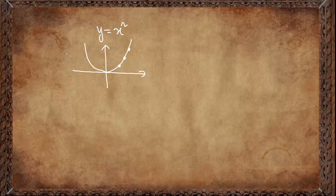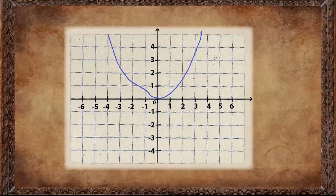In order to find the gradient of a curve, what we do is draw a tangent line at a particular point. The gradient of that tangent line at that particular point is fixed — after all, the gradient of a line is fixed. For another point, we draw another tangent line and find its gradient, which gives the gradient of the curve at that point.